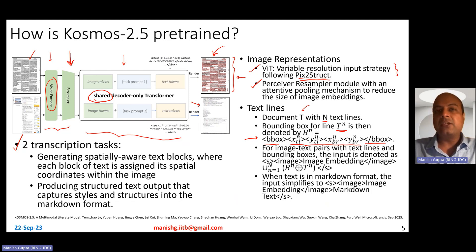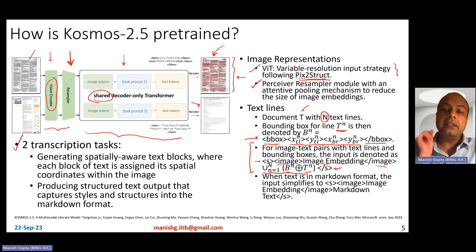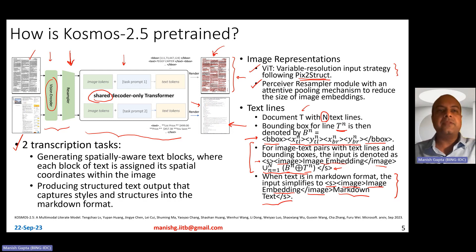This is just the bounding box coordinates — the text also has to be encoded. The overall encoding looks like this: S for start token, S for end of sequence, then you have the image embedding, and then a union over N equals 1 to N text lines — BN concatenated with TN, where BN is the bounding box and TN is the text. For the markdown format, there is no bounding box. The encoding is simply: start of sequence, image embedding, end of image, then just the markdown sequence, and then end of sequence. That's how Cosmos 2.5 is pre-trained.